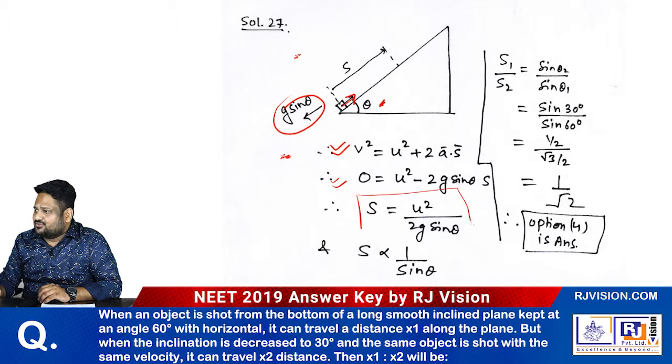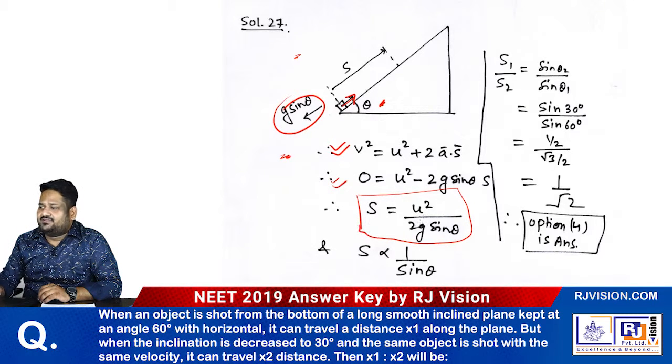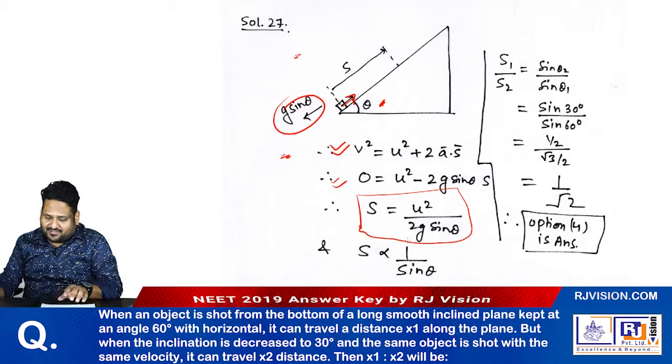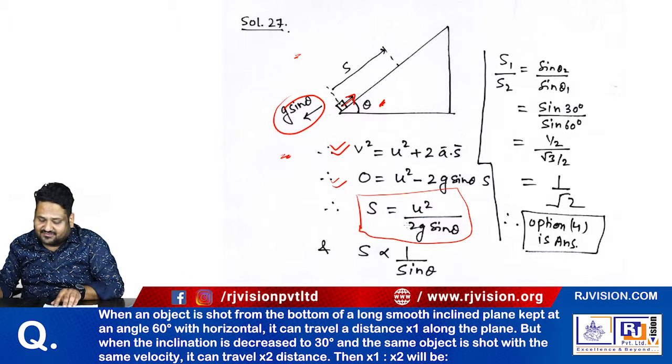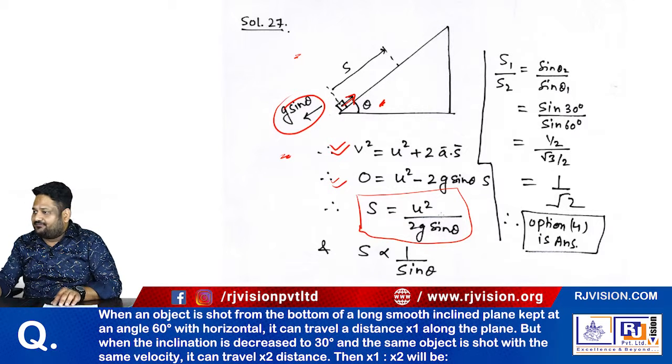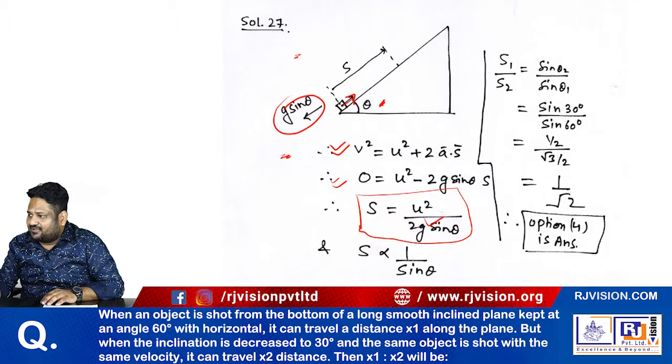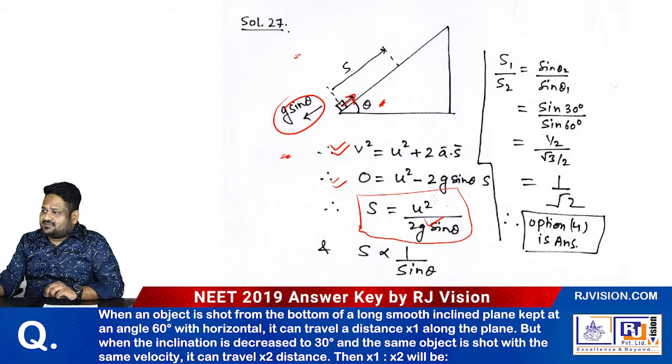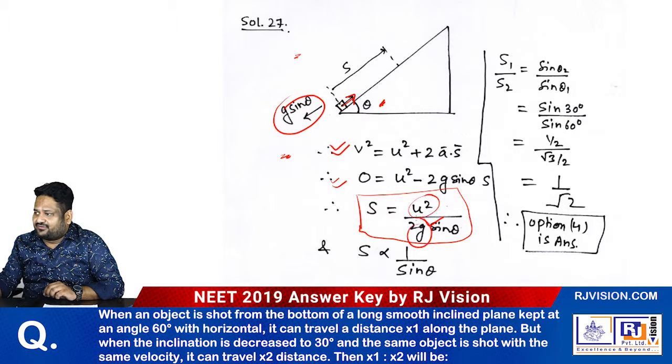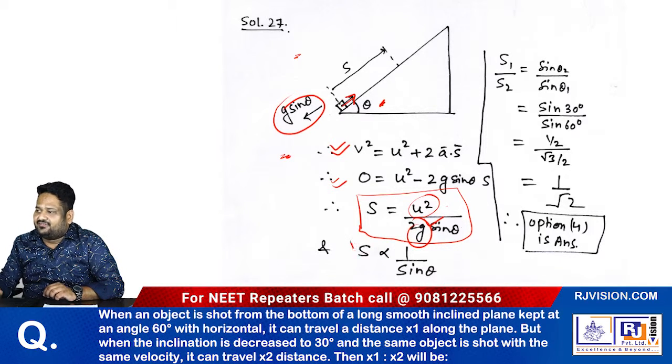That comes out to be s = u²/(2g sin theta). Now you have to compare the two different cases where the first angle is given as 60, the second angle is given as 30, and the velocities are equal. According to this final formula, s = u²/(2g sin theta), for comparison this u² is same, this 2 is same, this g is same.